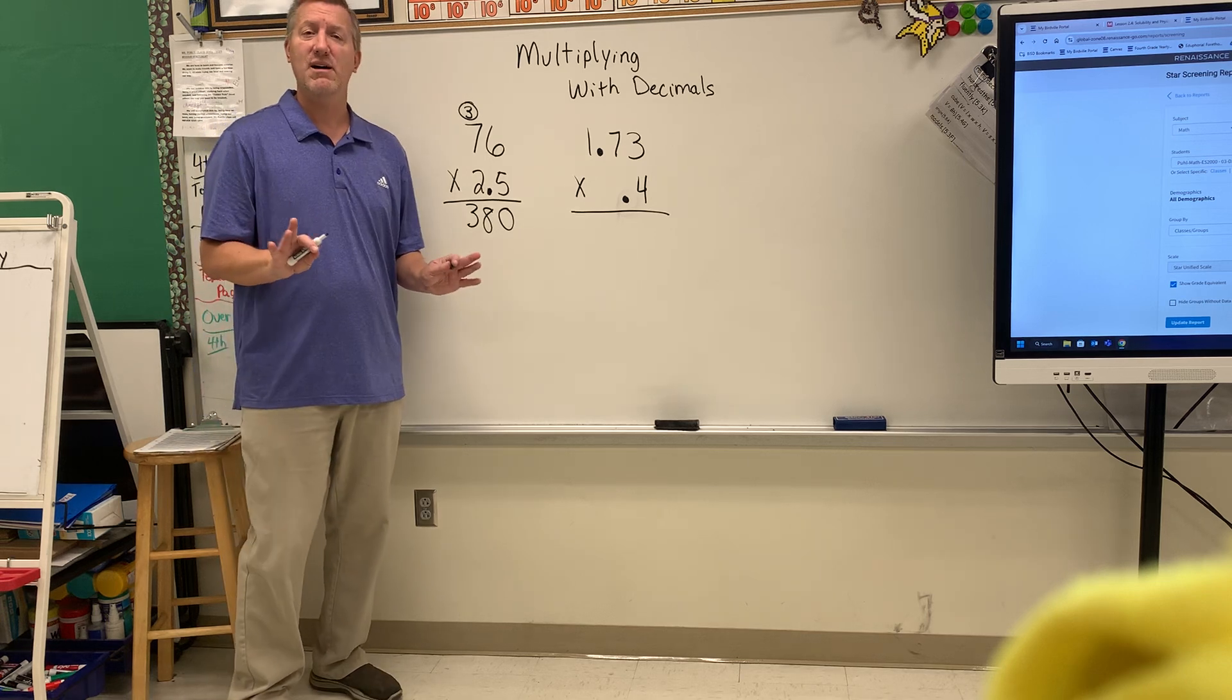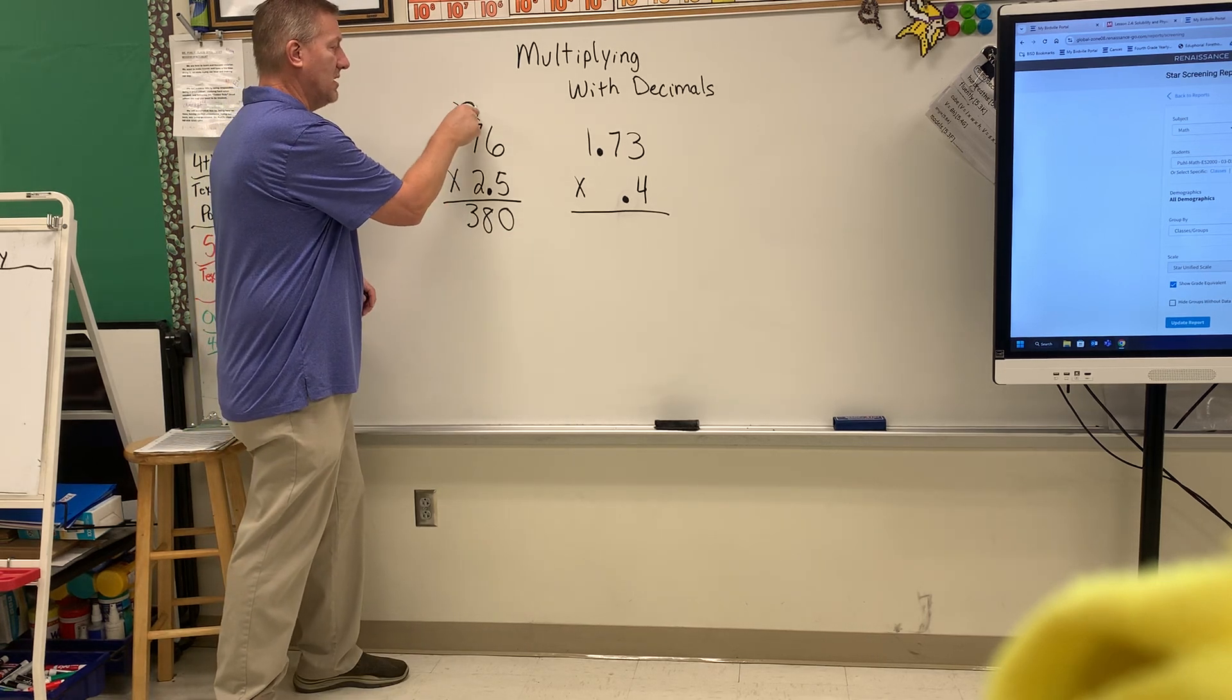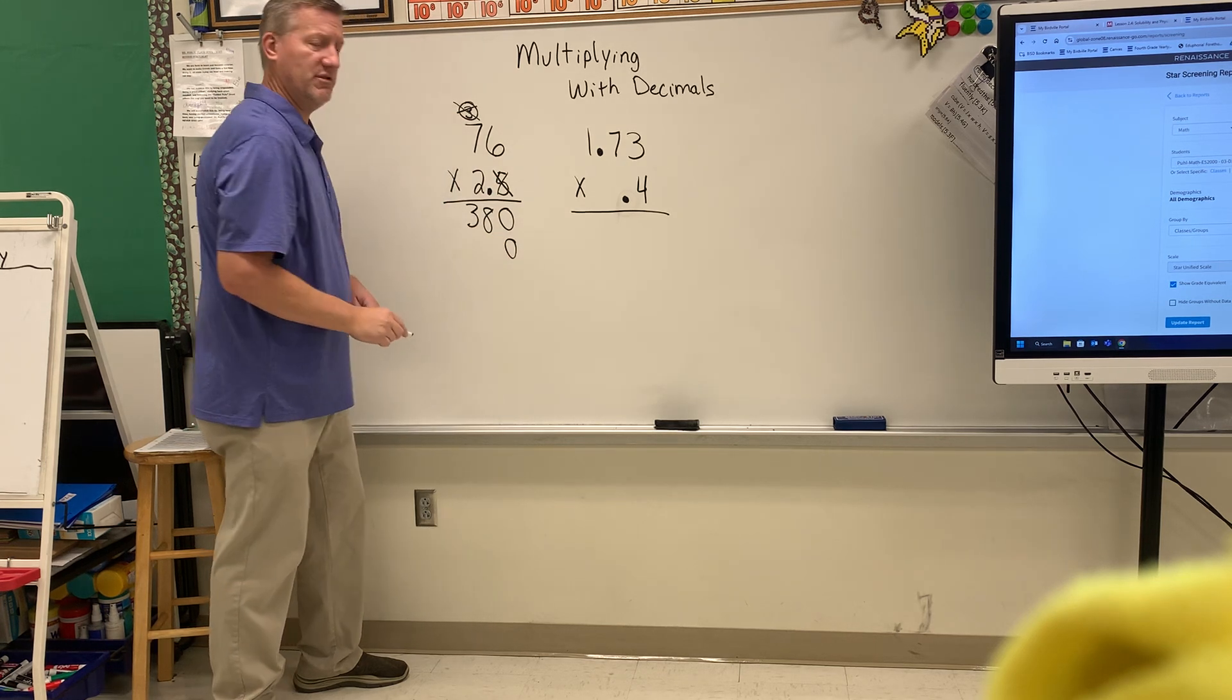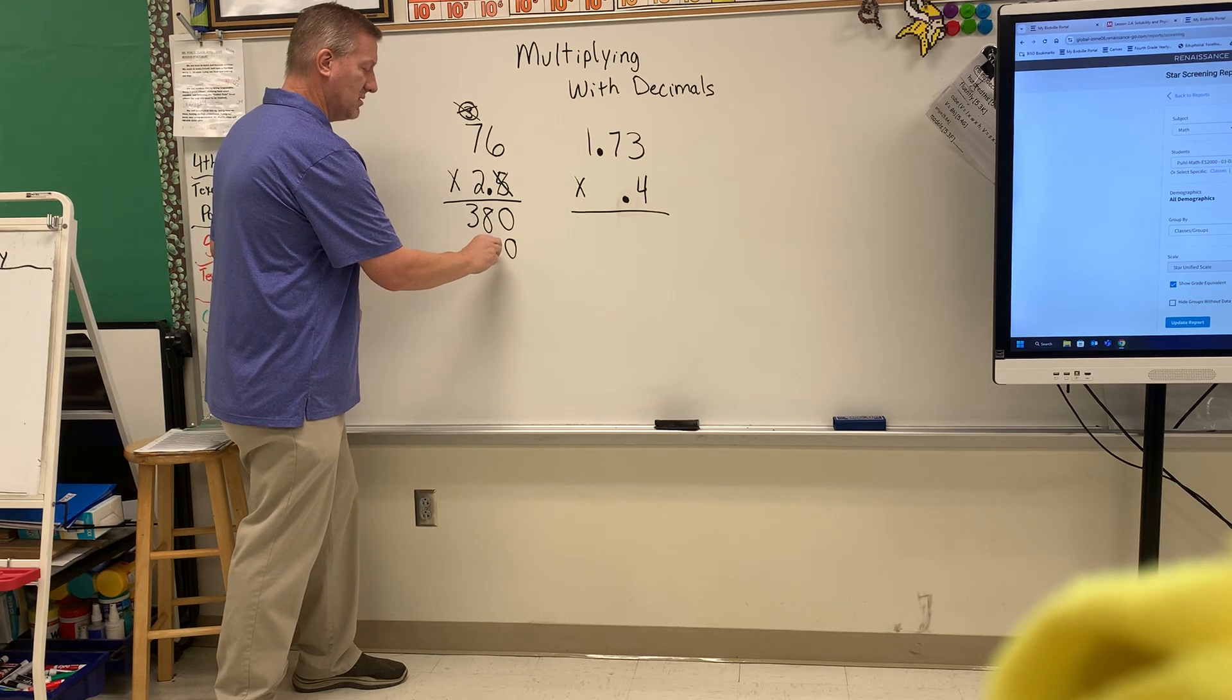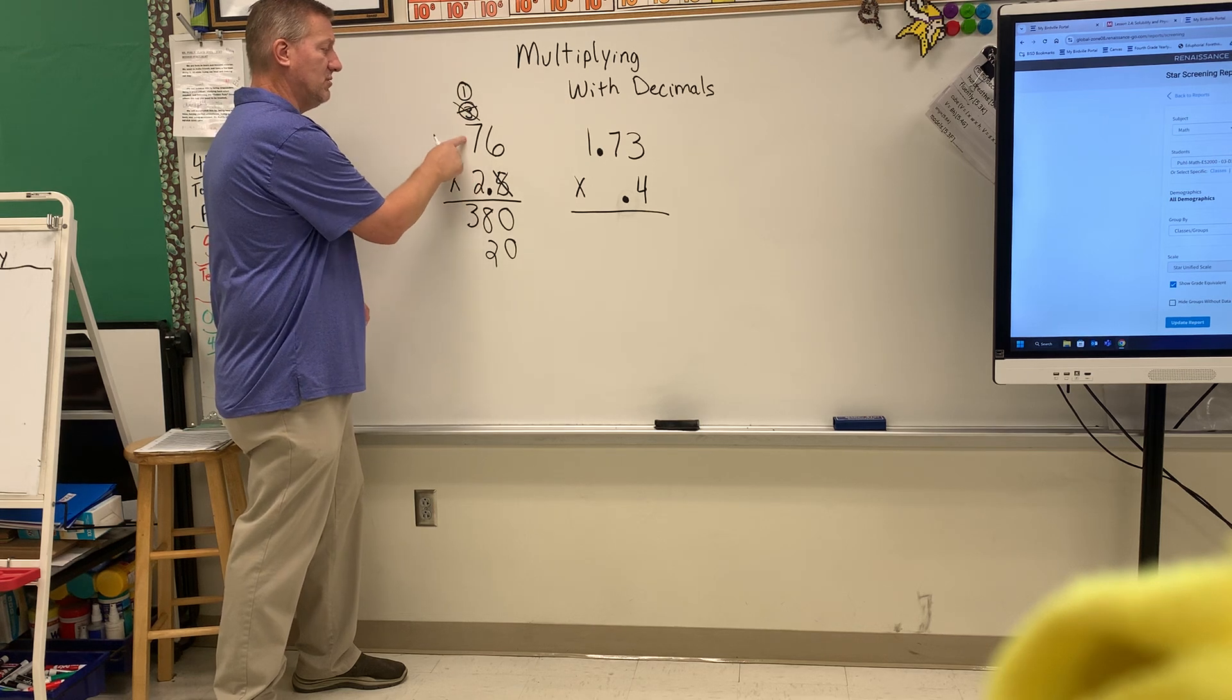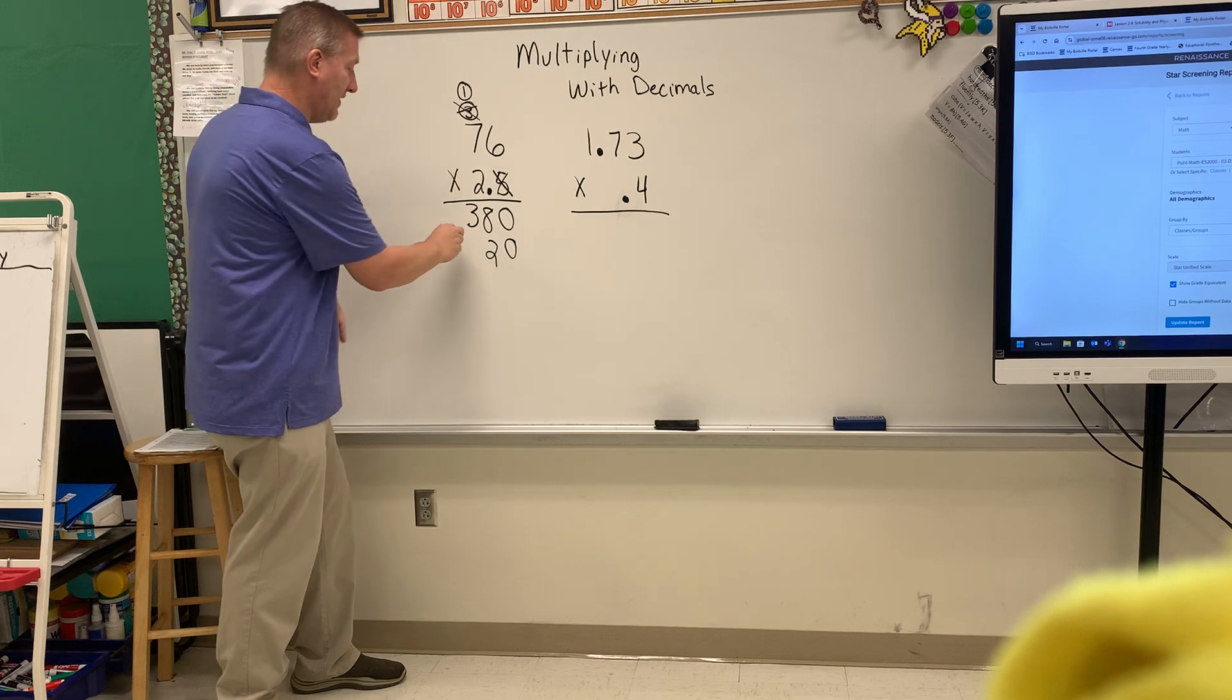Again right now just ignore the decimal, just multiply as usual. Cross that out, cross that out, put your 0 down there. 6 times 2 is 12, carry a 1. 2 times 7 is 14 plus 1 is 15.